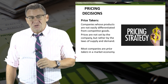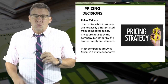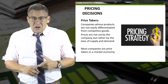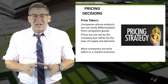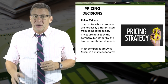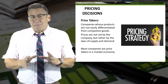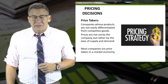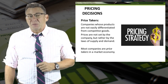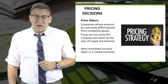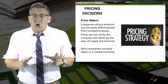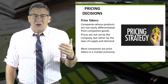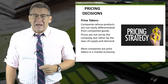When it comes to pricing decisions, companies tend to fall into one of two categories. Price takers are companies whose products are not easily differentiated from competitors' goods. Prices are not set by the company, but rather by the laws of supply and demand. Most companies are price takers in a market economy — this is why Coca-Cola and Pepsi are priced so similarly. If one was priced much higher than the other, few would buy it.